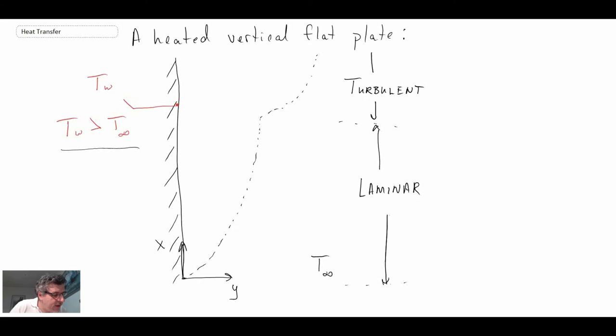If we were to look at the temperature profile at any given location, this is the boundary layer. For now, let's assume that the velocity boundary layer and the thermal boundary layer are approximately the same thickness. That would depend upon the Prandtl number, just like we saw for forced convection.